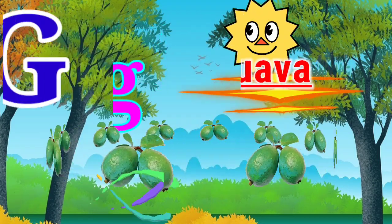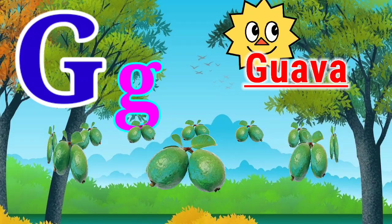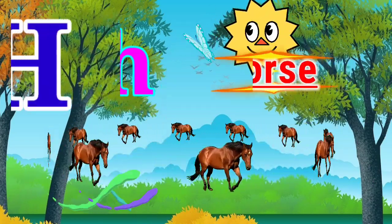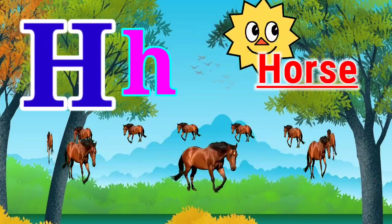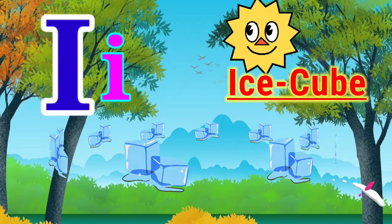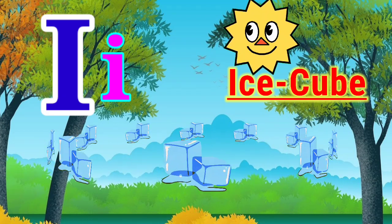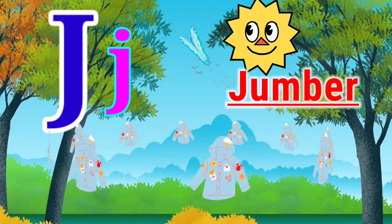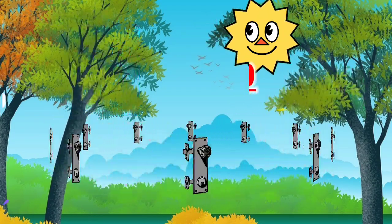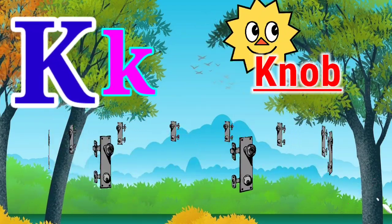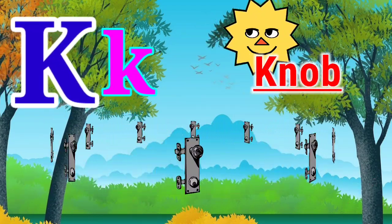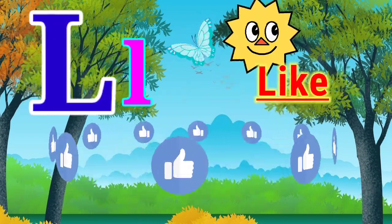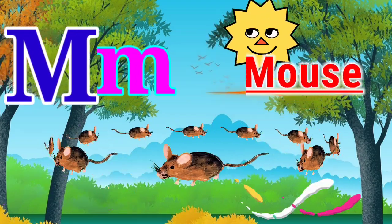G for guava. H for horse. I for ice cube. J for jambar. K for knob. L for light. M for mouse.